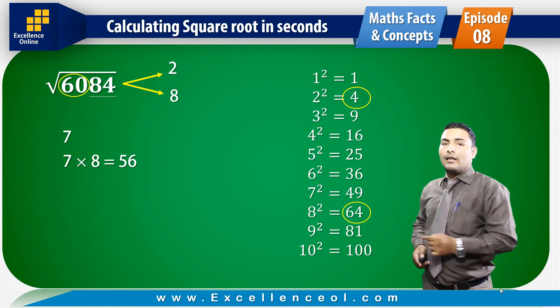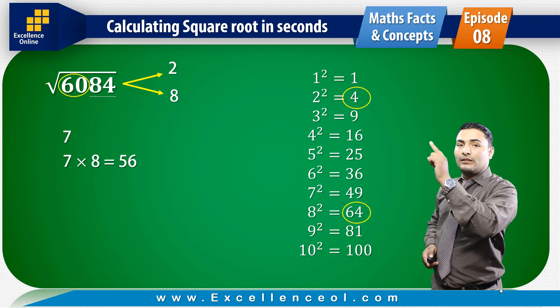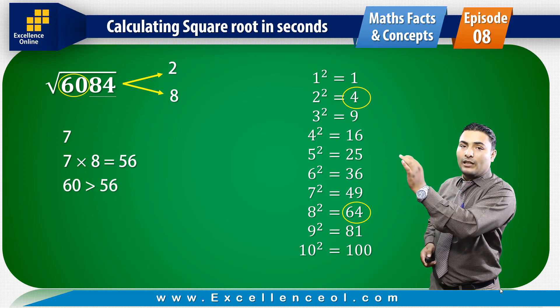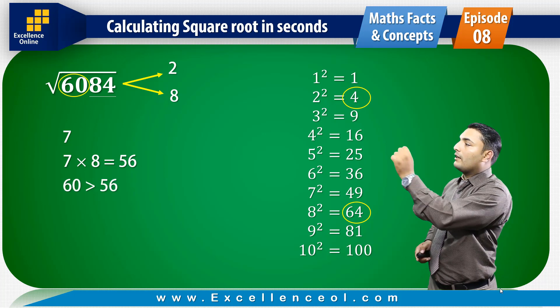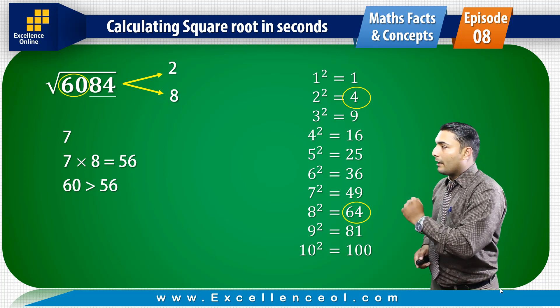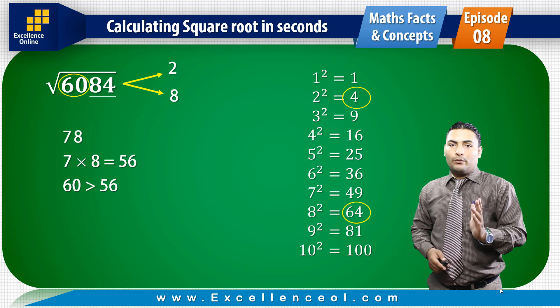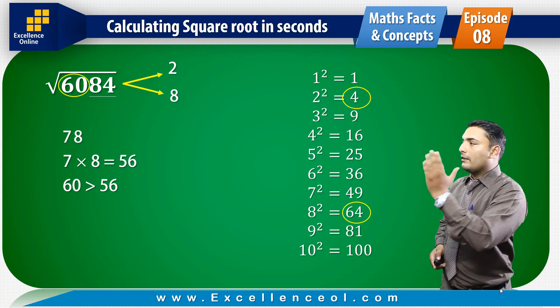Now, 56 is compared with the original number. The original number 60 is greater than 56. That means the original number is greater, so you have to take that number there. The square root of 6084 is 78.